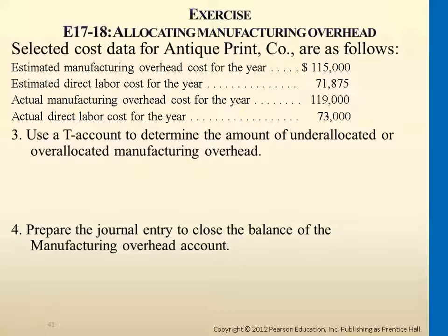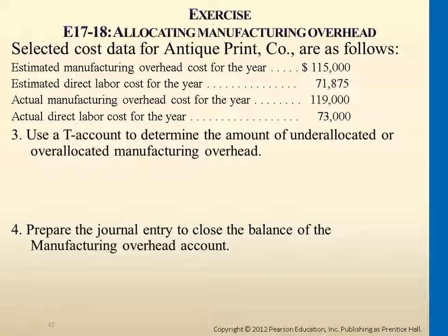So what do we do about this number? We need to increase cost of goods sold, so we would be debiting cost of goods sold by 2,200 and crediting manufacturing overhead by 2,200. The whole point of doing this is to adjust the costs that we allocated short to those job orders. The actual cost is 119,000; we only assigned 116,800. So the 2,200 under-allocation, we adjust and increase cost of goods sold altogether at year end.